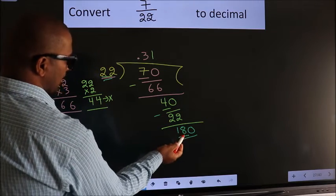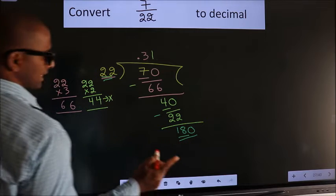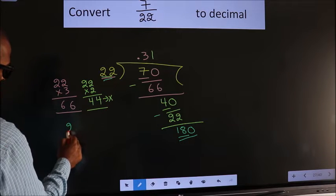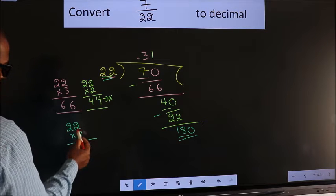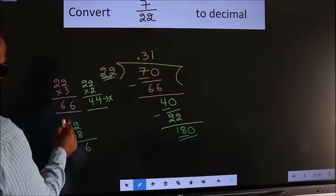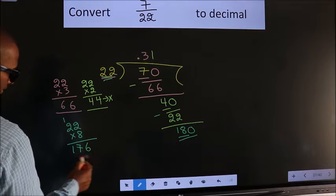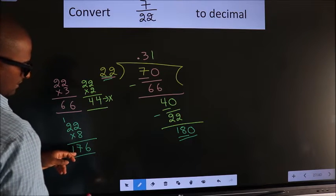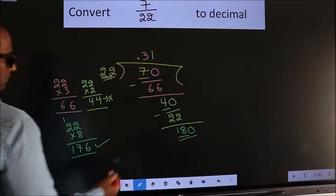A number close to 180 in 22 table is, let us check with 8. So 22 into 8. 8 times 2 is 16. 6, 1. 8 times 1 is 8 plus 1, 17. So yes, 176 is close to 180. So we take 8.